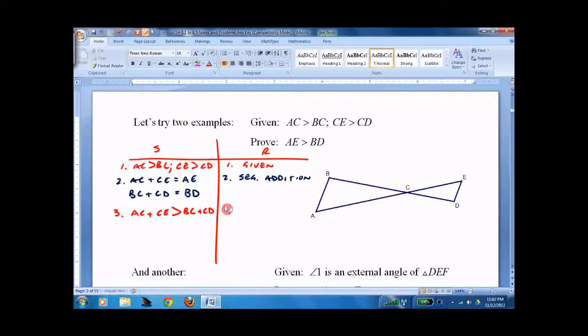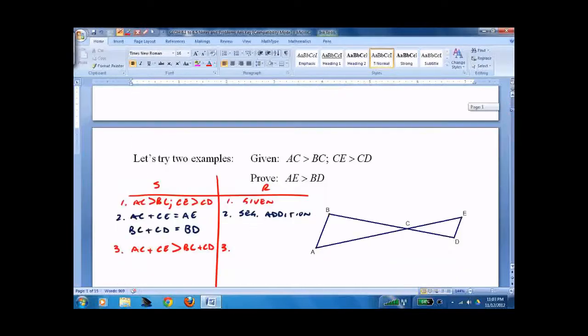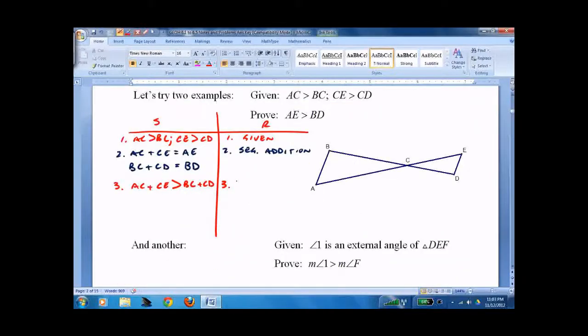And that is a classic. If you go back to the previous page, here it is right here. A is greater than B, C is greater than D. Greater than or equal. A plus C is greater than B plus D, as long as one of them is greater. In this case, they both are. Addition inequality.